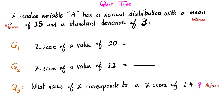Quiz time. A random variable A has a normal distribution with a mean of 15 and a standard deviation of 3. Please find the z-score for a value of 20, the z-score for a value of 12, and what value of A corresponds to a z-score of positive 1.4. Let me know your answer in the comments — you'll find the answer key in the next video in this statistics playlist.